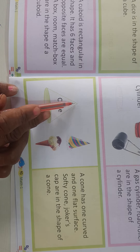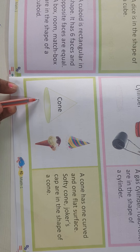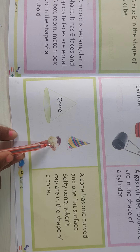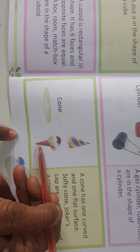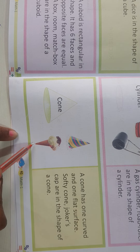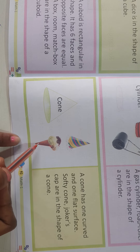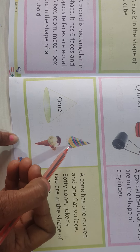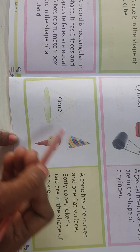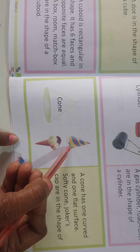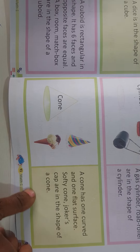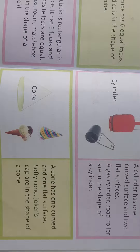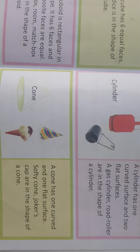This is cone. A cone has a circular base and comes to a point at the top, like a triangle shape. For example, when you eat ice cream, the lower part that holds it is cone-shaped. That is a cone.